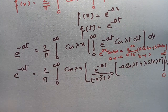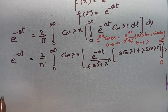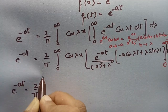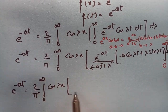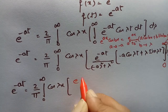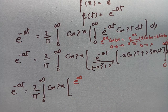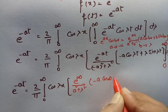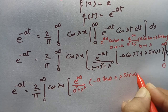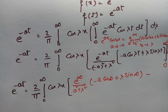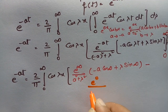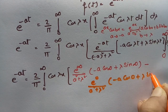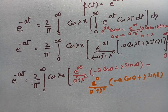Between the limits 0 to infinity — be very careful while substituting. e^(-at) equals (2/π) times the integral from 0 to infinity of cos(λx). Substituting the upper limit: e^(−∞)/(a² + λ²) times (−a·cos(∞) + λ·sin(∞)), minus the lower limit: e^0/(a² + λ²) times (−a·cos(0) + λ·sin(0)), into dλ.